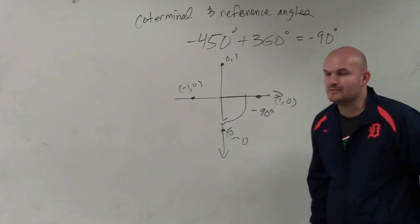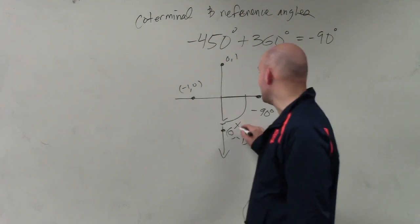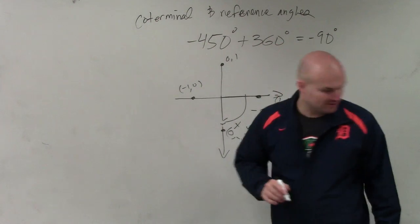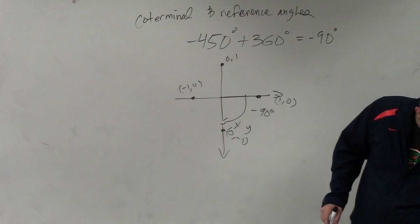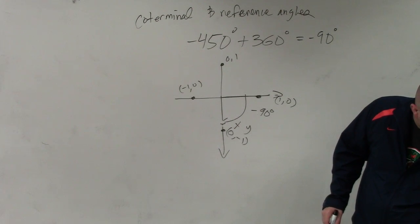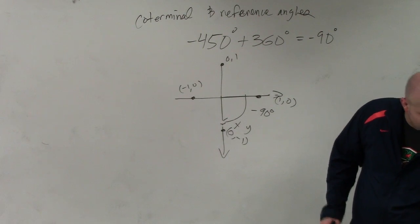this point is going to be 0, negative 1. And if you're looking at 2x and y, now what they're asking us to do is find the sine, cosine, and tangent for the given quadrantal angle if the value is undefined.